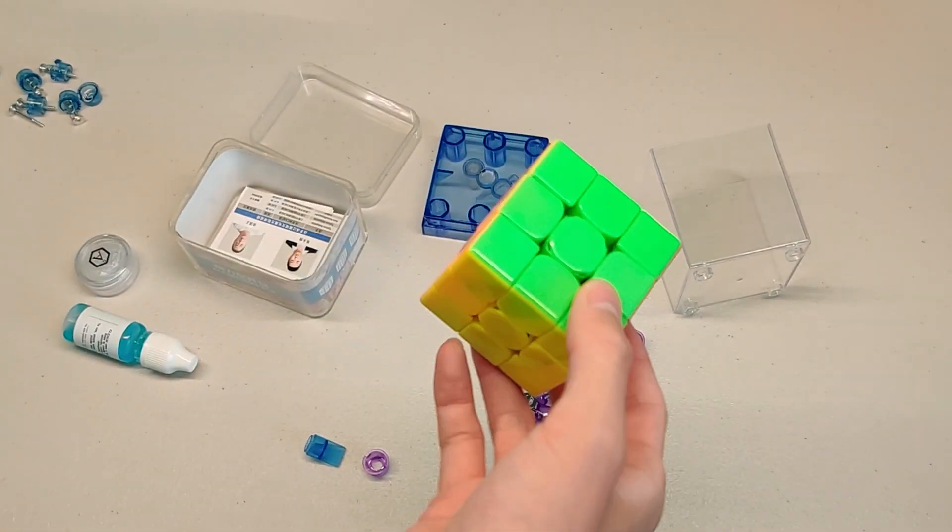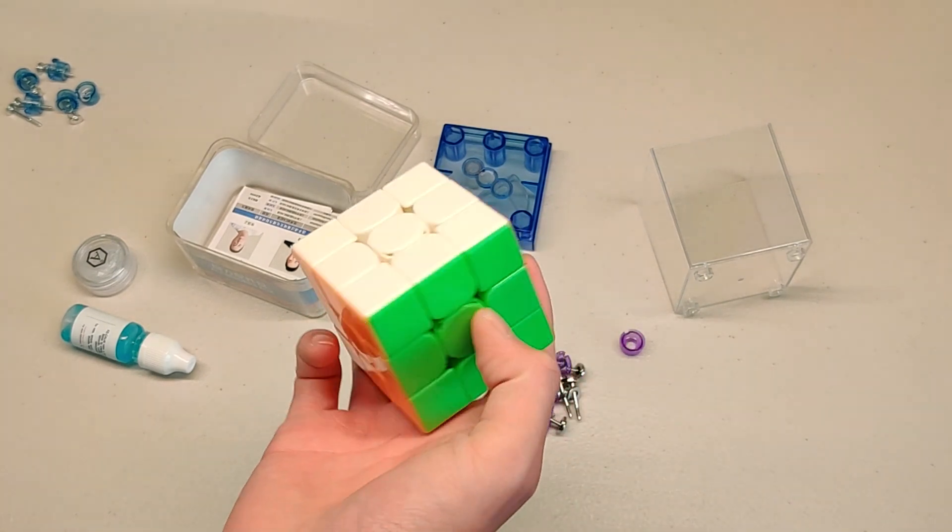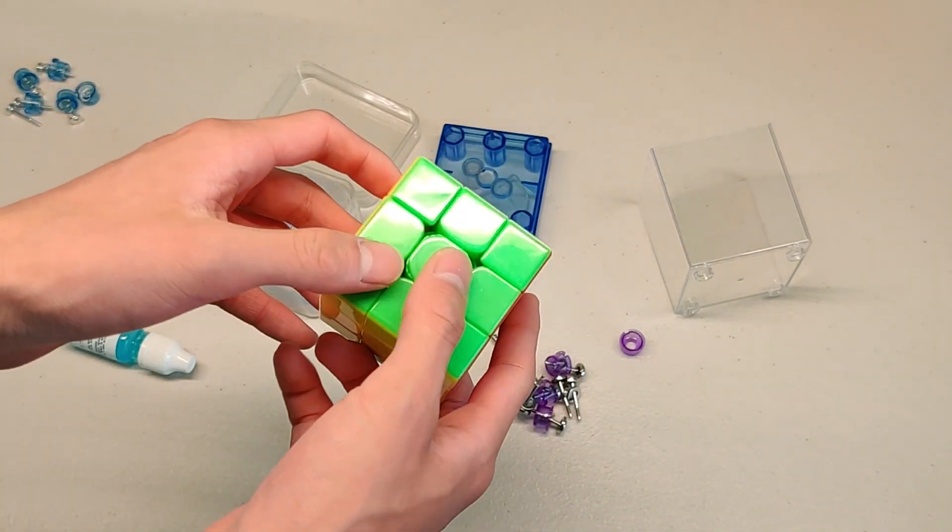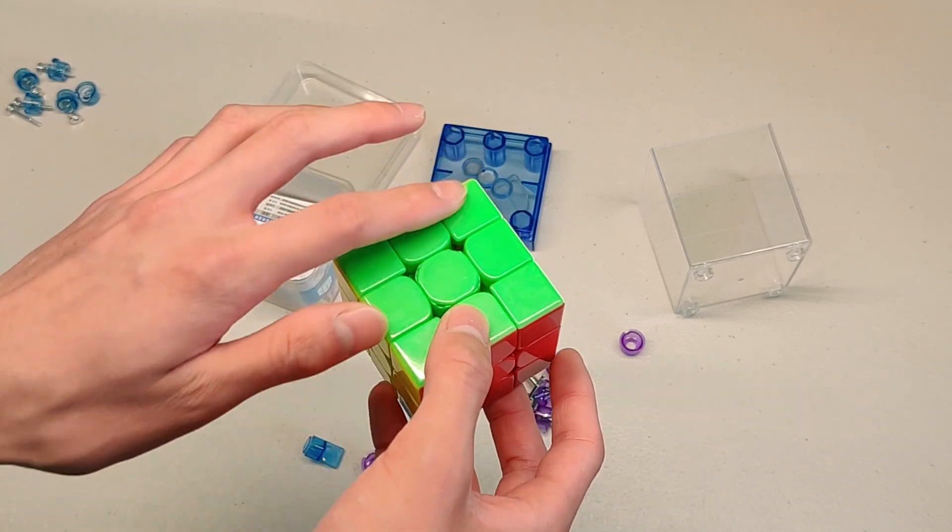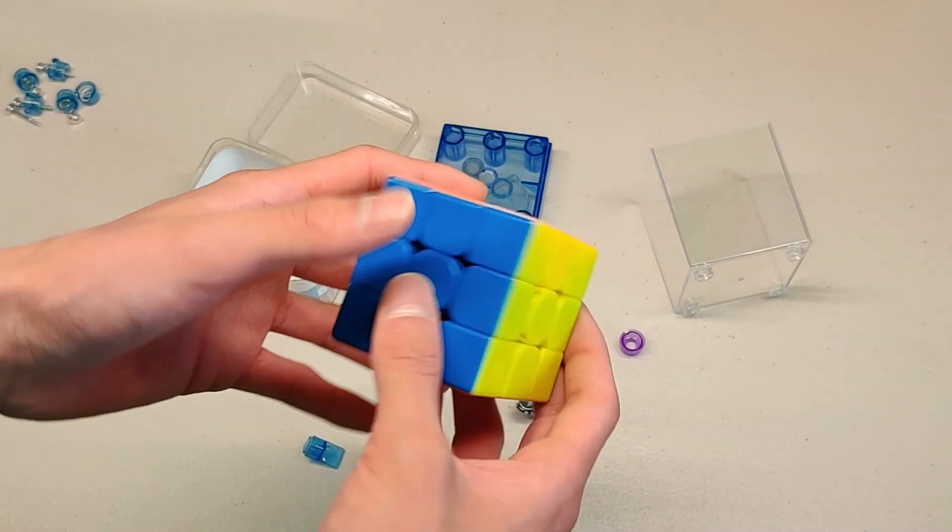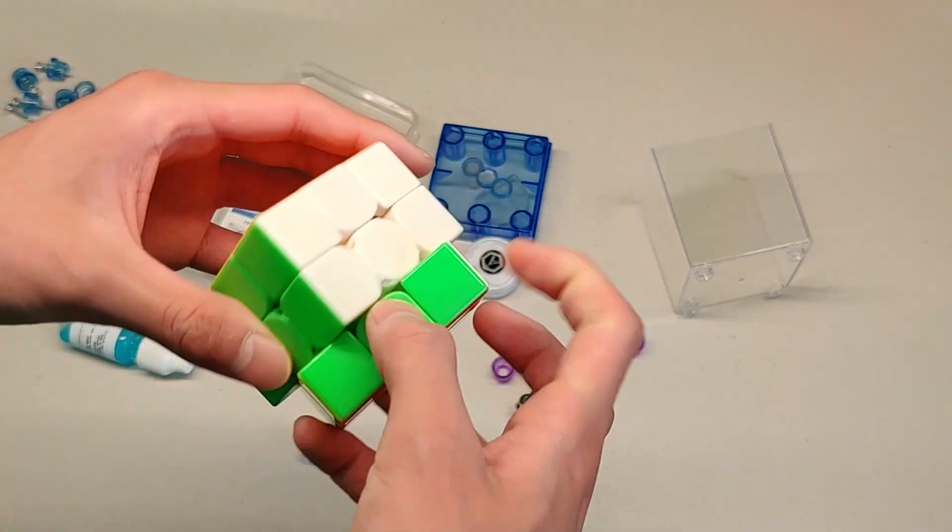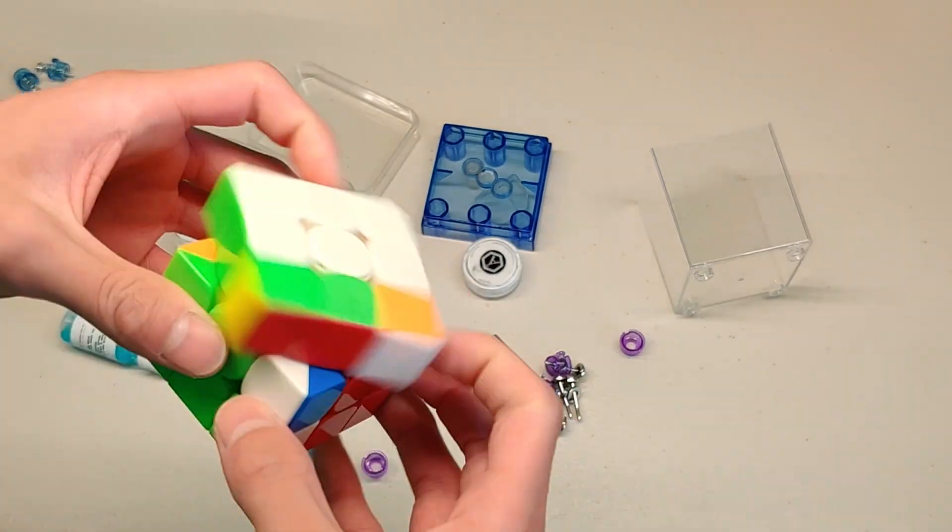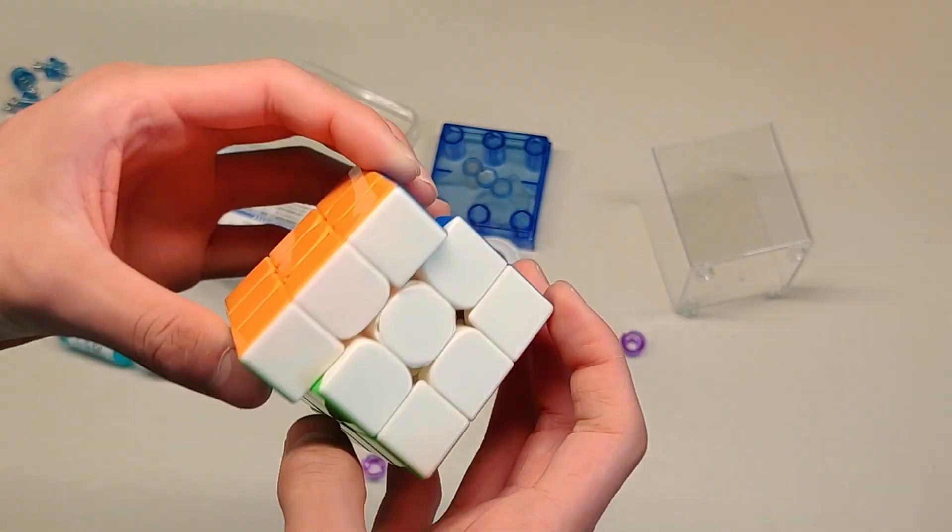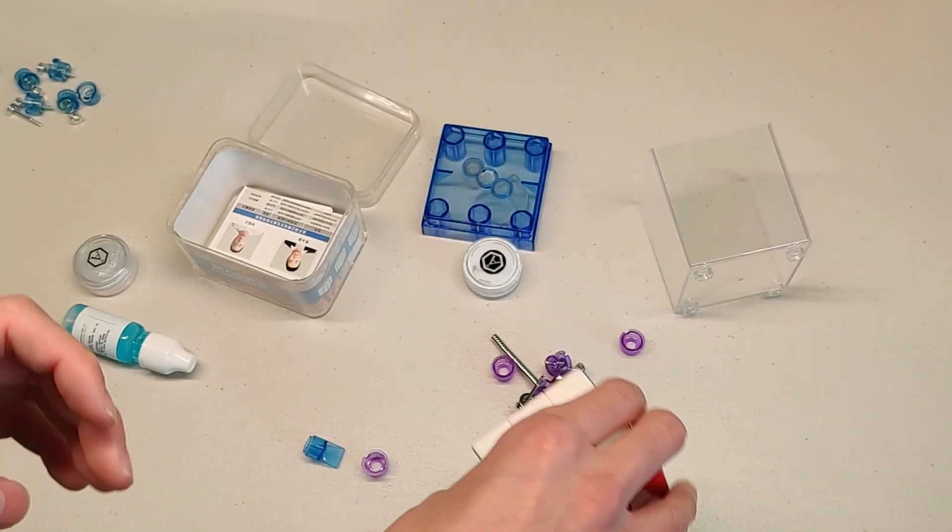We have the cube here, standard WRM. In the lighting, man, that green looks insane, but it's actually just the standard kind of duller colors. For some reason, on my camera, they look really vibrant, which I guess is not bad. Let's just do some turns. This, just on its own, is still a very nice cube. It feels very airy, light, and just a very nice cube.